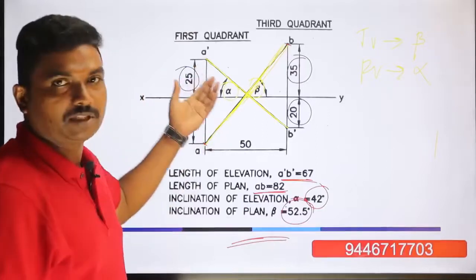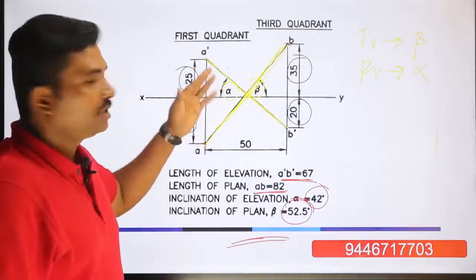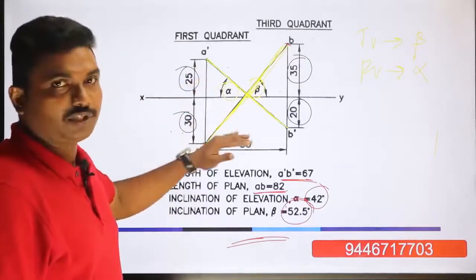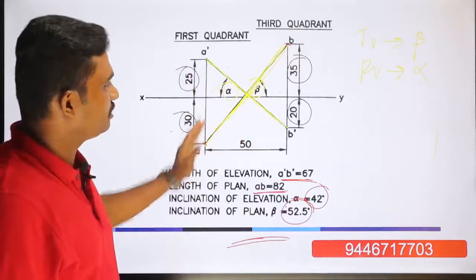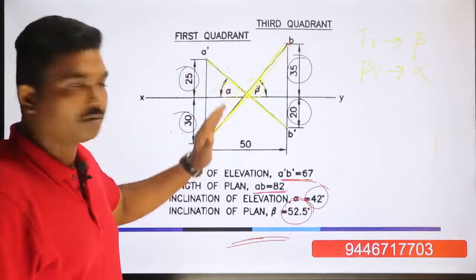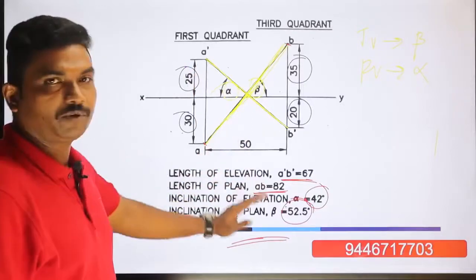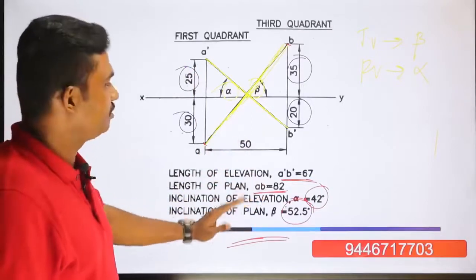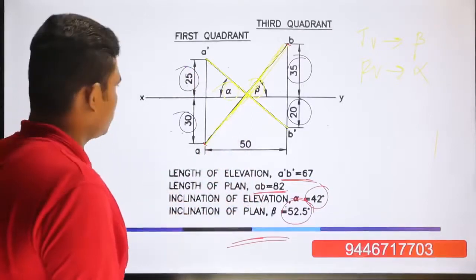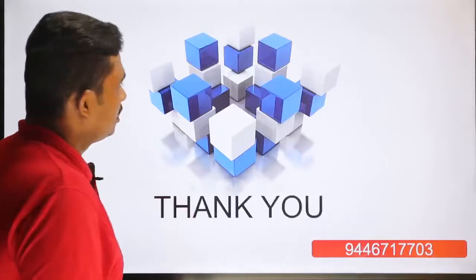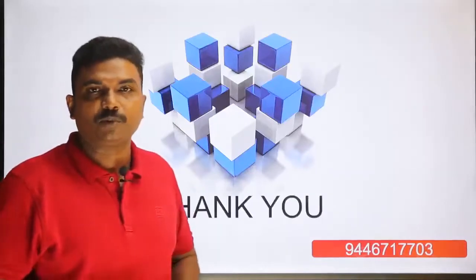We can write a question of the lines. This is the front view and top view — we can measure from the front view and top view. We can measure the angles: alpha and beta measurements. The next portion is the projection of points.